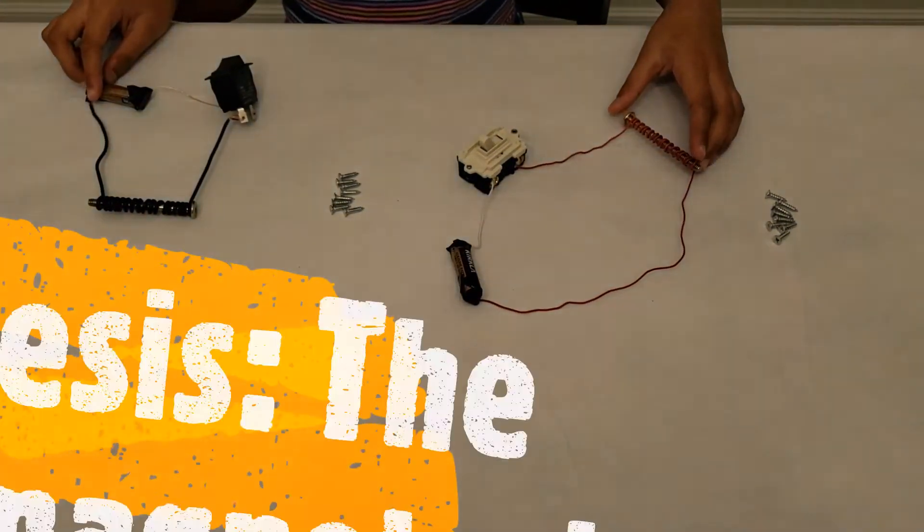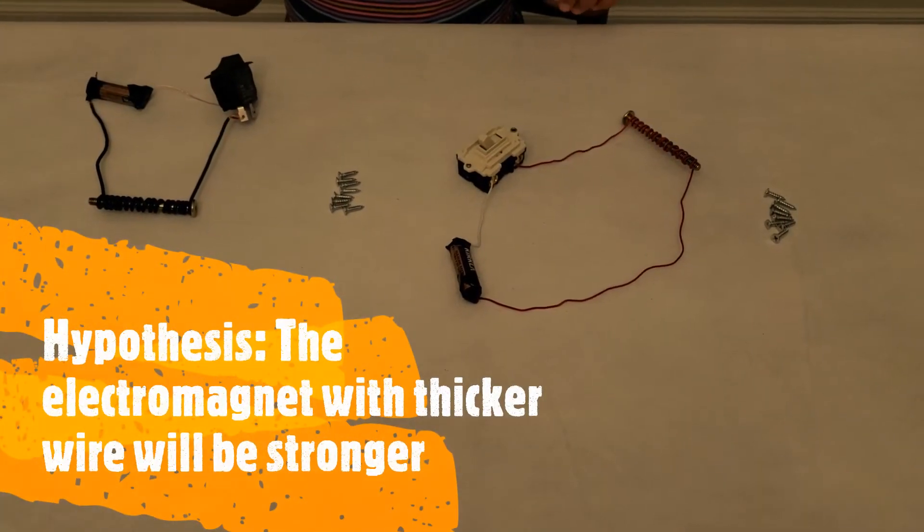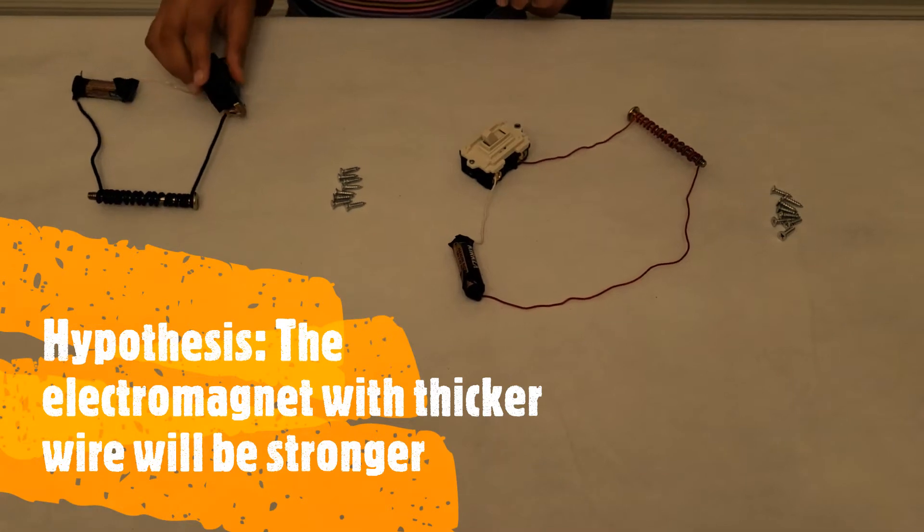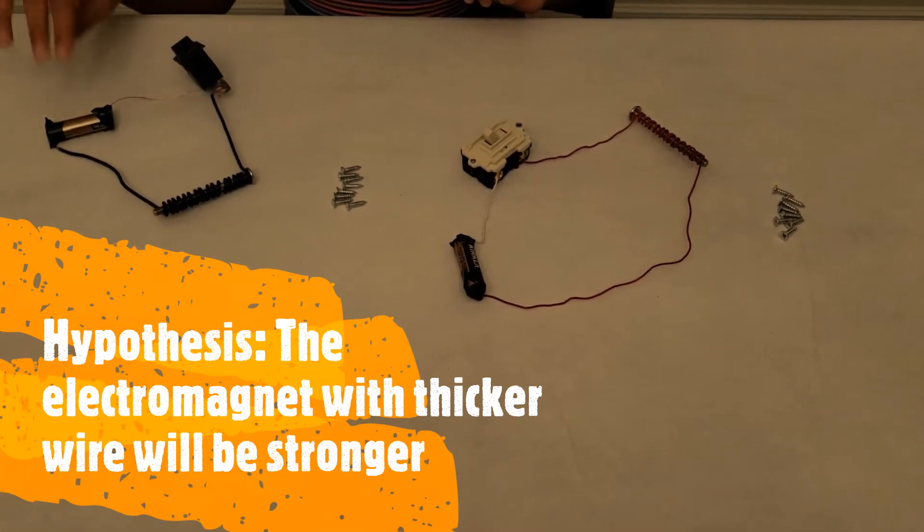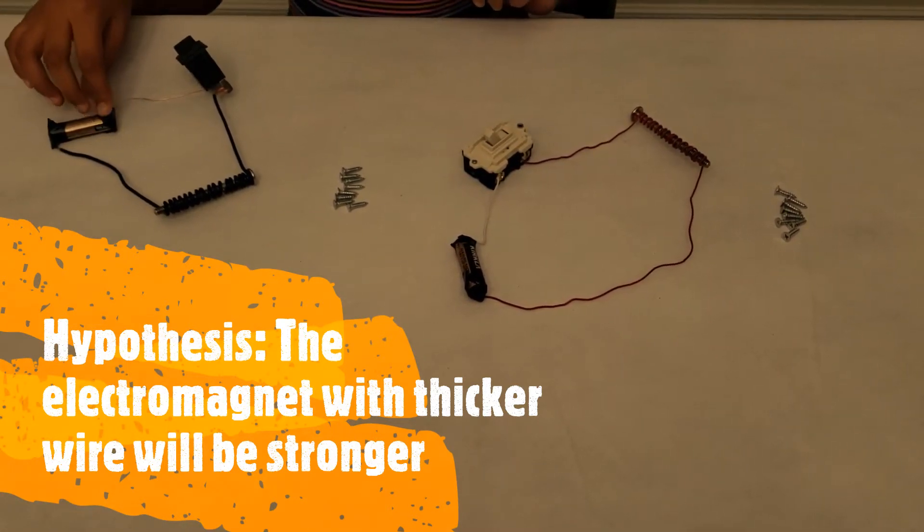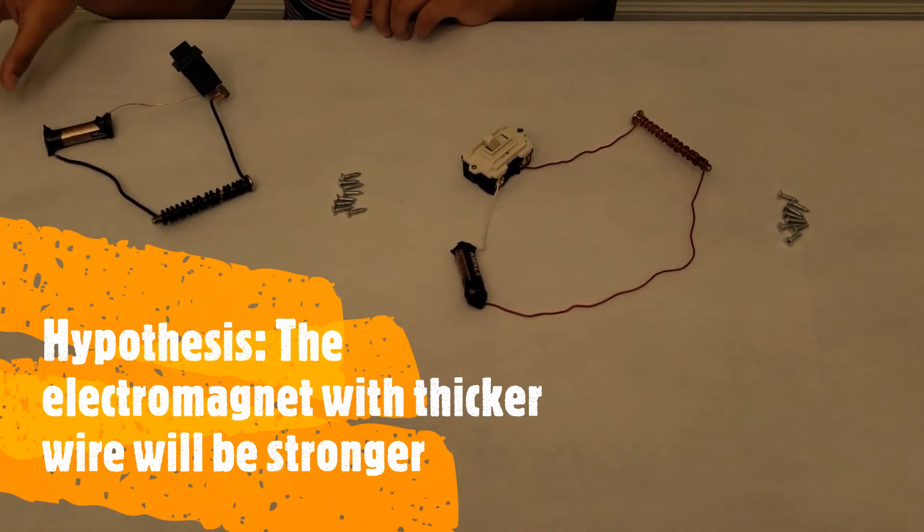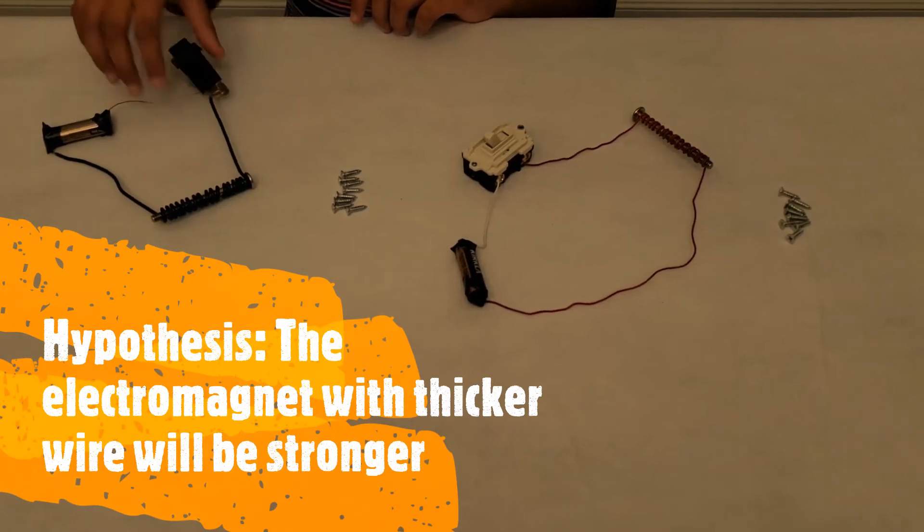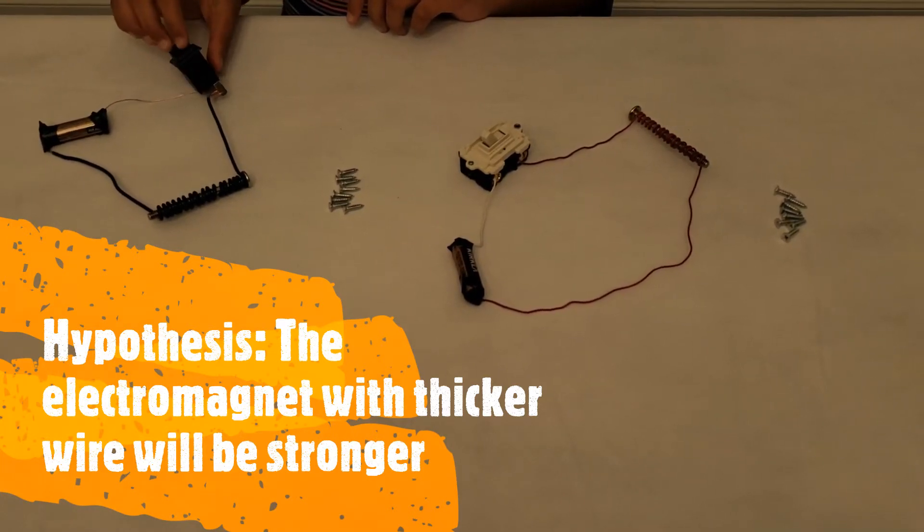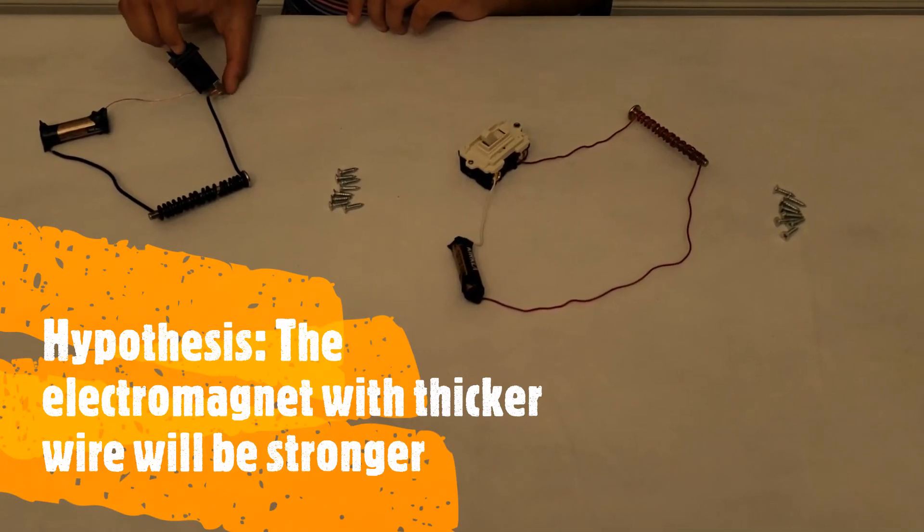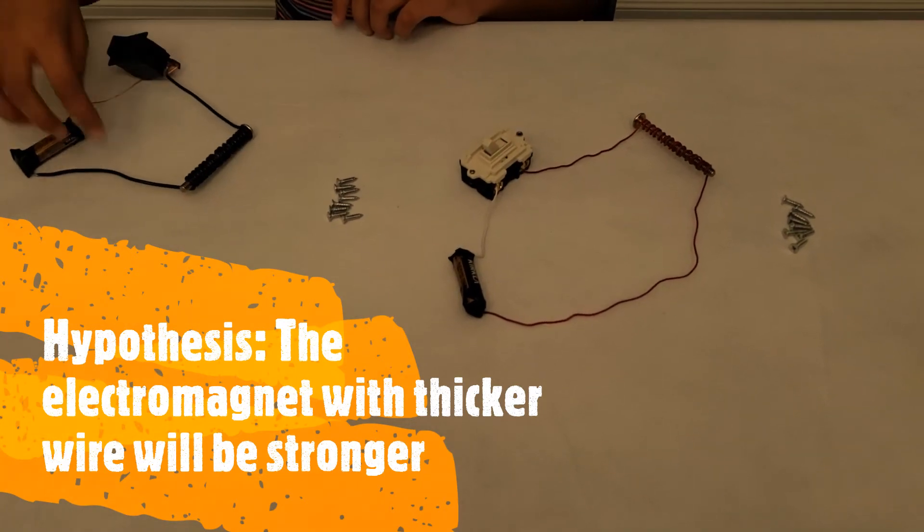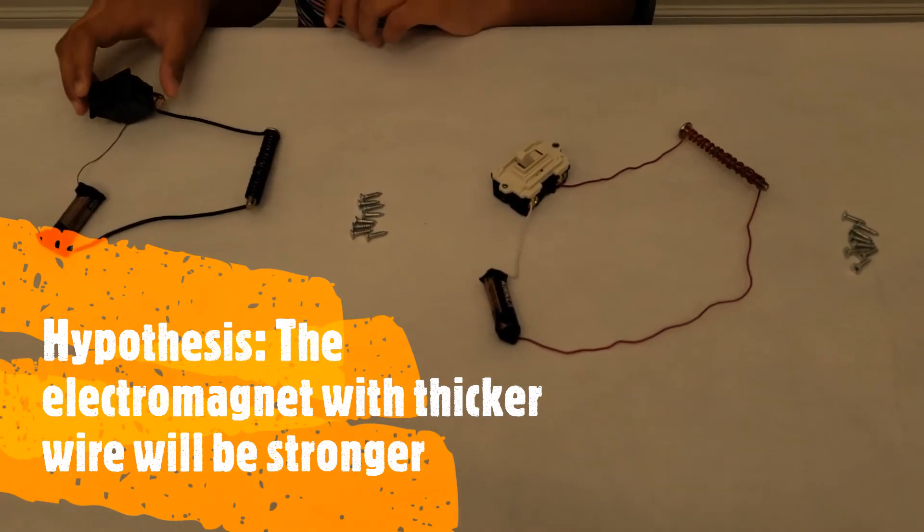Which one will be more powerful? So I'm going to make a hypothesis. I think that the electromagnet with the thicker wire will have more electrons, so that means more current, more power. That's why I think the electromagnet with the thicker wire will be more powerful.